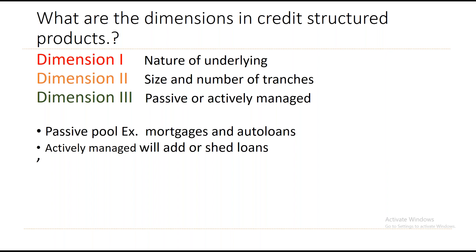There are three dimensions of credit structured products. Dimension one is the nature of the underlying — what types of assets are held in the pool. Dimension two is the size and number of tranches in the pool. Dimension three — the most important — is whether the structured assets are passively or actively managed. A passive pool requires little action, such as mortgages and auto loans that repay over time. An actively managed pool adds or sheds loans from time to time based on default predictions.